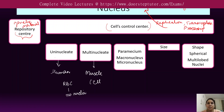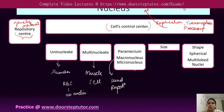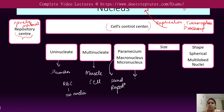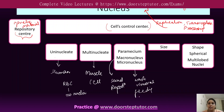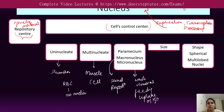The cells that contain no nucleus are the RBCs. Paramecium contains two different nuclei: the first is the macronucleus, which is mainly responsible for sexual reproduction, and the macronucleus is also responsible for day-to-day or daily functions of life such as waste removal, feeding, and uptake of water. These functions are carried out by the micronucleus.